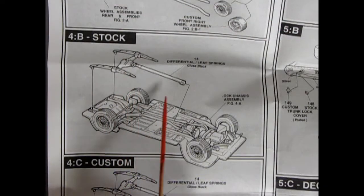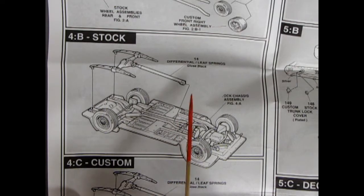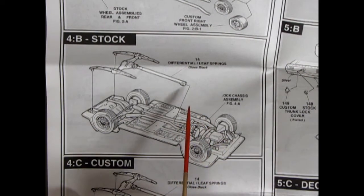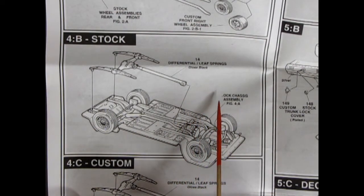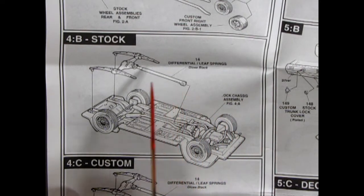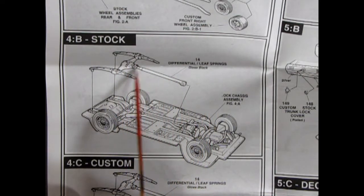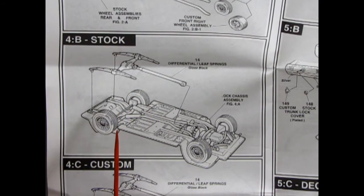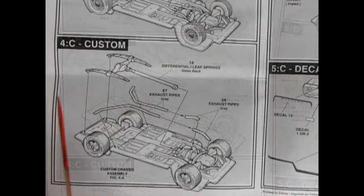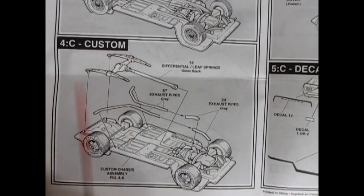Section 4B is the stock undercarriage. And here, actually, it's fairly easy. Lock chassis assembly. But this says, chassis assembly. Differential leaf springs are one unit as well as the drive shaft. And this all hooks up behind your engine and glues into the back over top of your wire axle. So it covers it much like in the MPC Dukes of Hazzard kit.